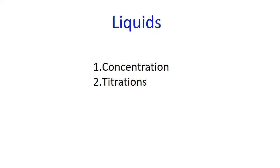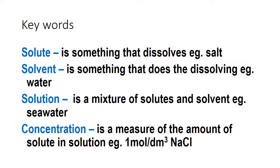Now finishing with liquids and concentration. Key words: solute is something that dissolves, like sugar or salt; solvent is something it dissolves in, like water; solution is a mixture of solvent and solute, for example salt water or a cup of tea; and concentration is the measure of the amount of solute in the solution.